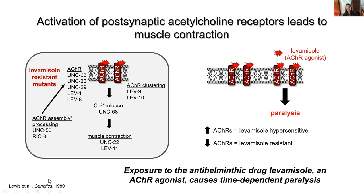In 1980, Lewis et al. did a forward genetic screen for levamisole-resistant mutants, and they found mutations in genes encoding subunits of the acetylcholine receptor, genes important for acetylcholine receptor assembly, processing, clustering, and genes that function downstream of the receptor in calcium release and muscle contraction. More recently, screens from the Bessero lab looking for more subtle levamisole-resistant phenotypes have found genes important for acetylcholine receptor abundance and localization.